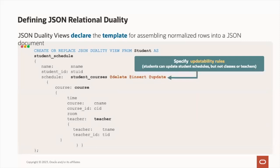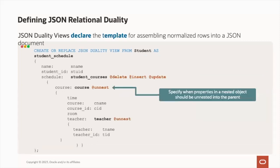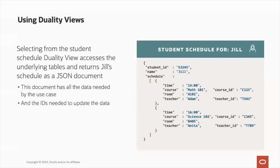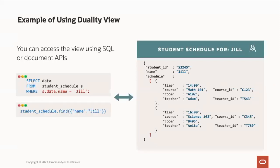In addition to defining the document layout and hierarchy, we can also set updateability rules. In this case, we're explicitly labeling the student courses as being at delete, at insert, at update. However, we're not explicitly labeling that for course and teacher, meaning that students can update student schedules, but not classes or teachers. We can also specify unnesting to say that properties in that nested object should be unnested into the parent. So selecting from the student schedule duality view accesses the underlying tables and returns Jill's schedule as a JSON document. You can access this same view using SQL or document APIs — in SQL, using the dot object notation model, or using a simple value pair to perform an operation through a package.